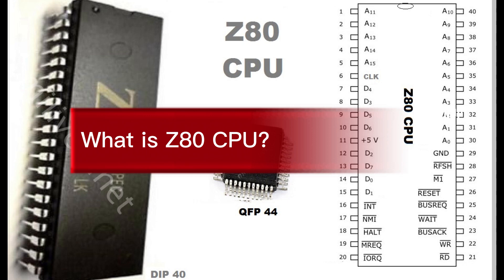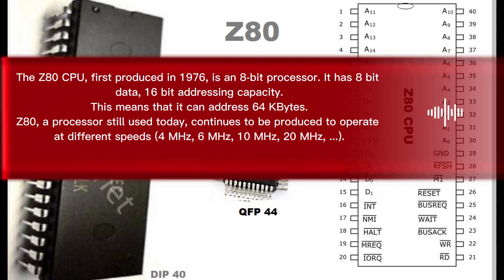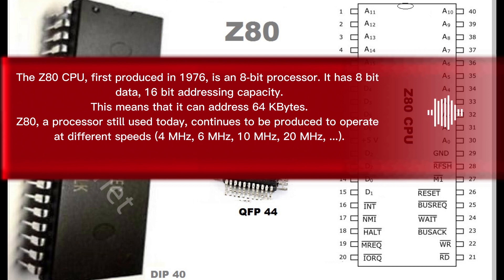What is the Z80 CPU? The Z80 CPU, first produced in 1976, is an 8-bit processor. It has 8-bit data and 16-bit addressing capacity, which means that it can address 64 kilobytes.